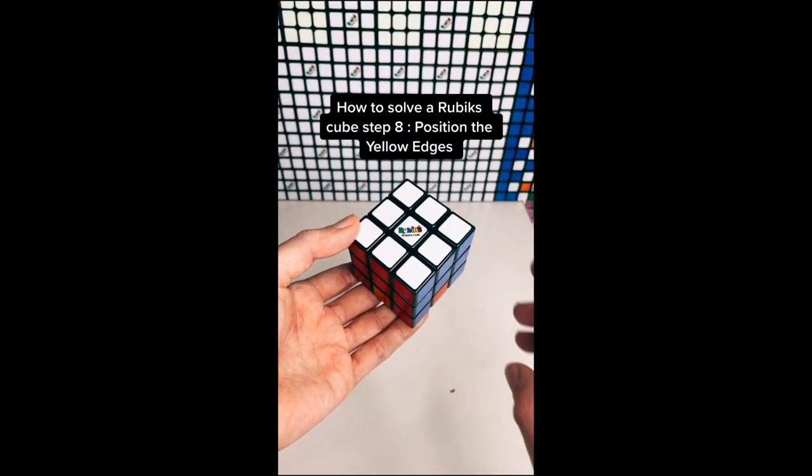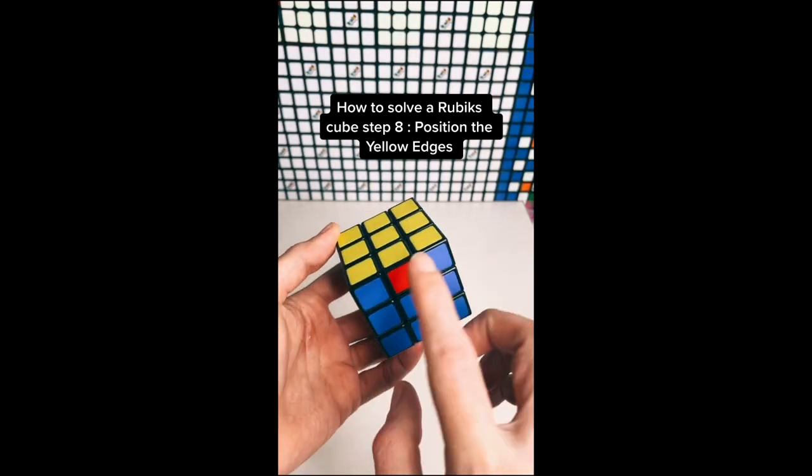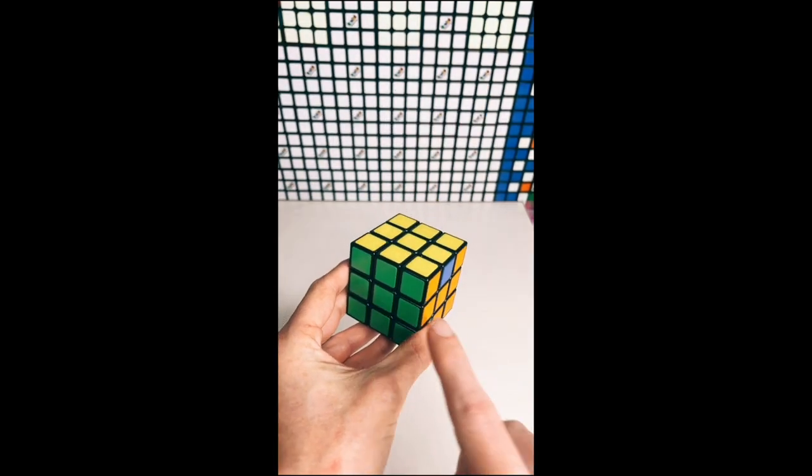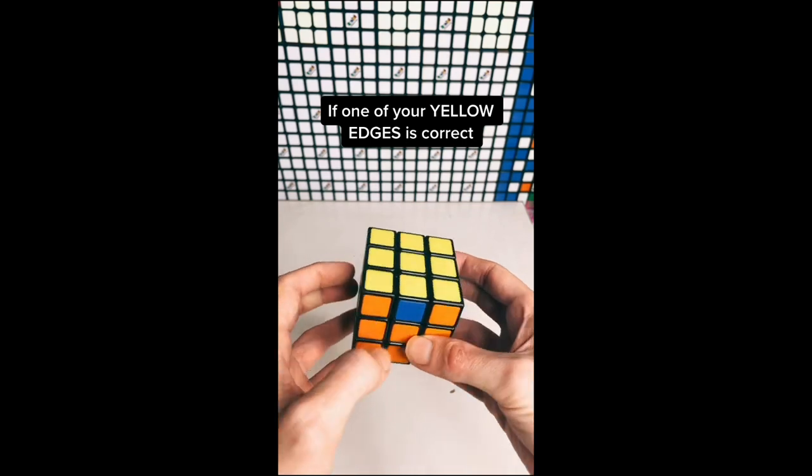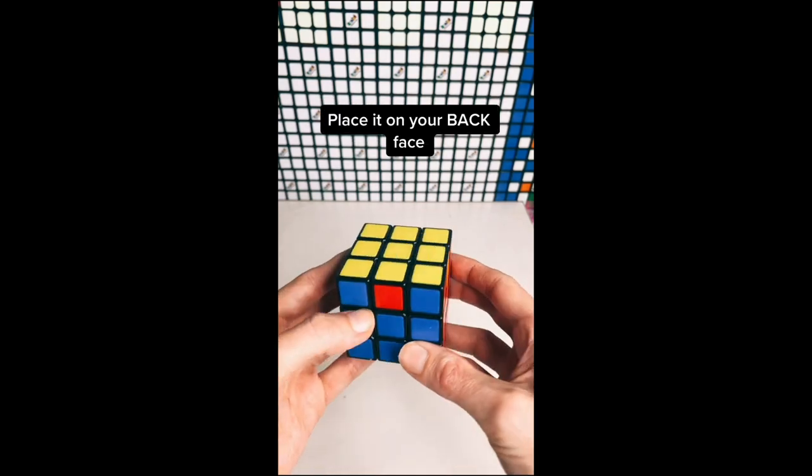How to solve a Rubik's Cube step 8: Position the yellow edges. If one of your yellow edges is correct, place it on your back face.